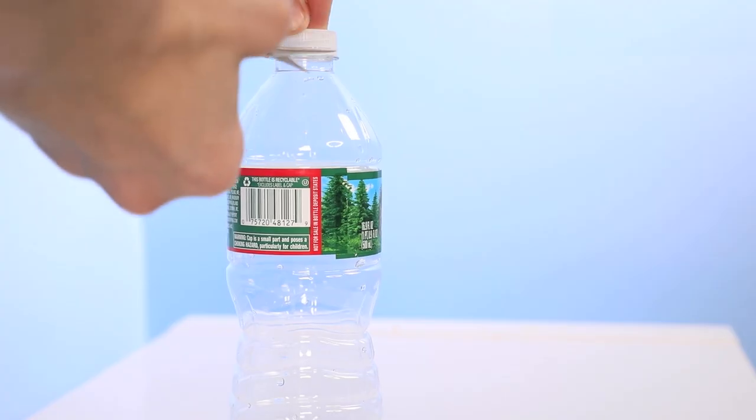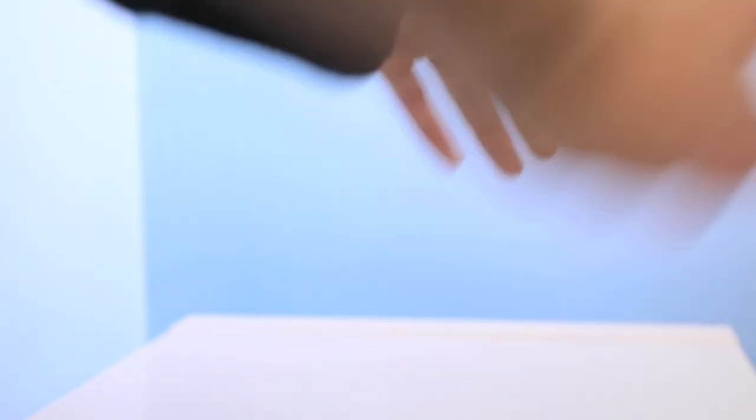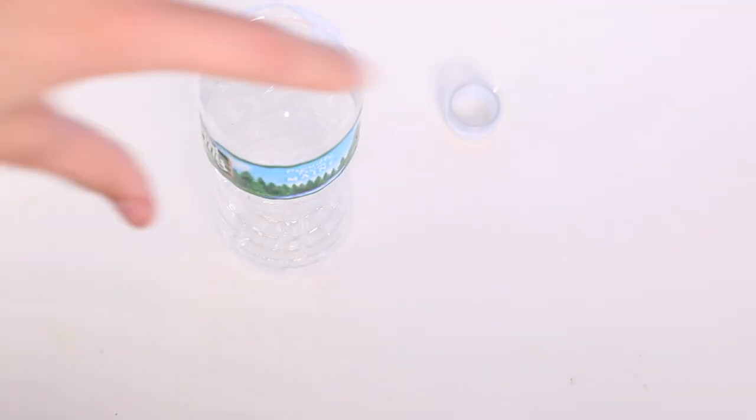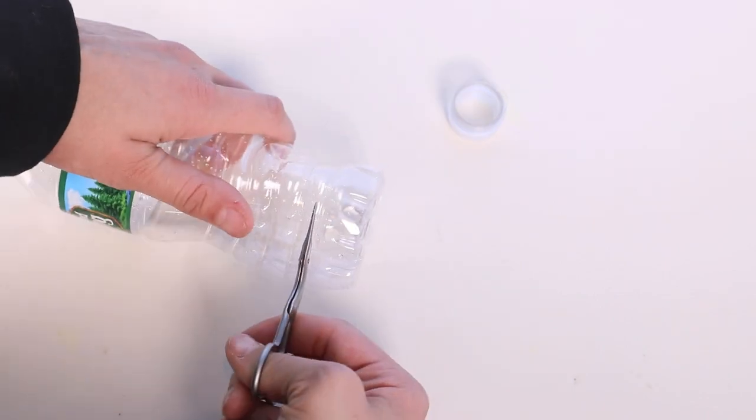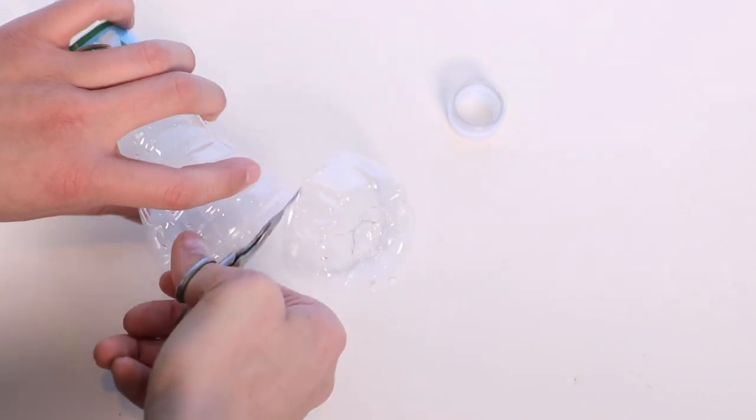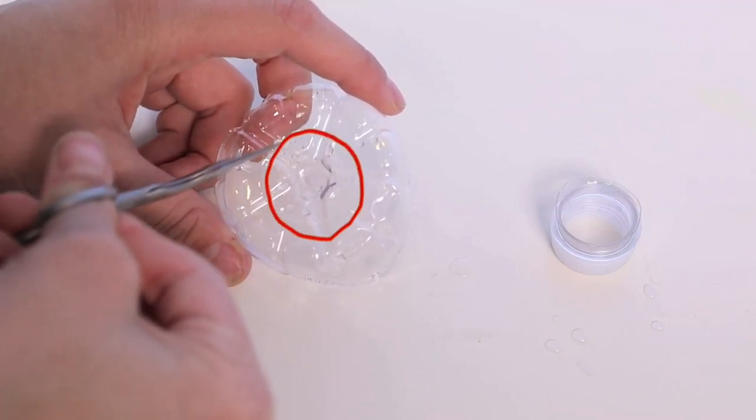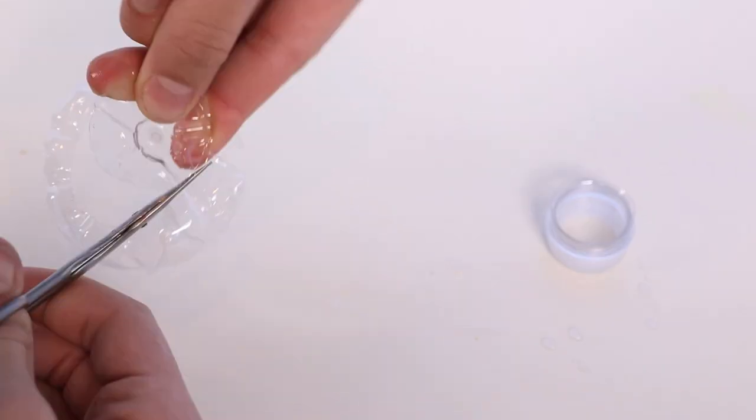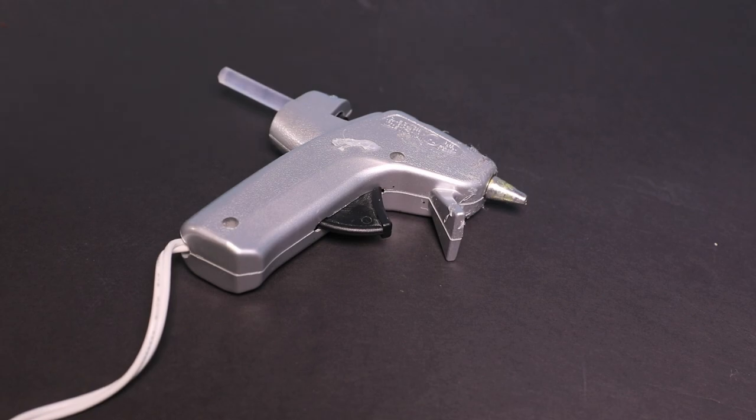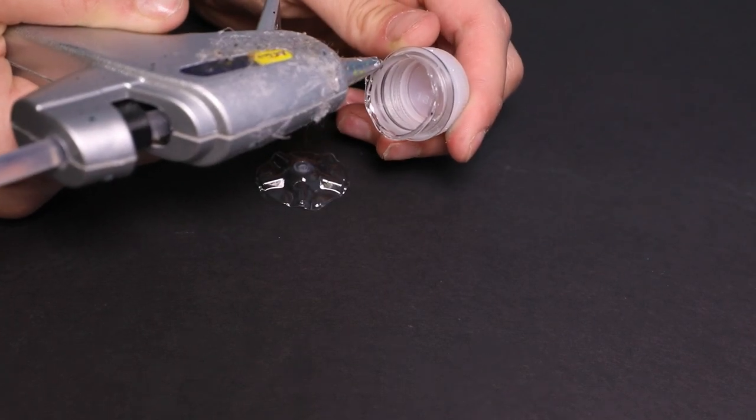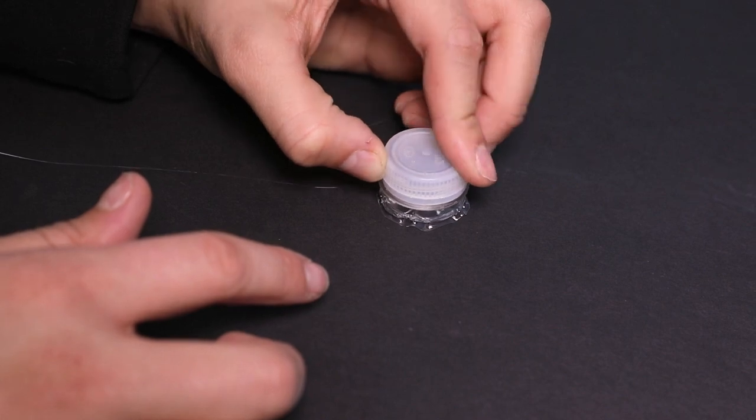To make the eyeshadow, cut off the cap area of the water bottle. Then cut off the bottom half of the water bottle. Then cut a circle out of the bottom. And take a hot glue gun and hot glue the two pieces together. Then that's the container.